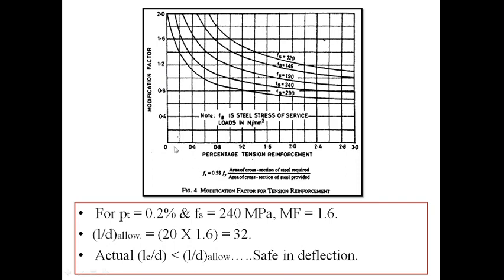We wonder that as we increase the percentage of tension steel, the modification factor decreases, making the element more unsafe in deflection. And as we increase the grade of steel, thereby increasing FS, the modification factor also decreases, making it more unsafe in deflection.